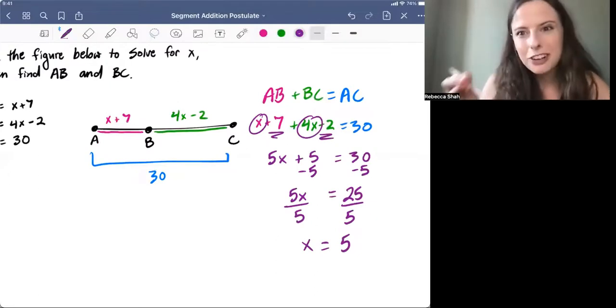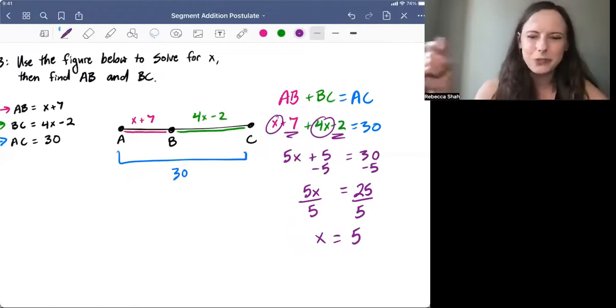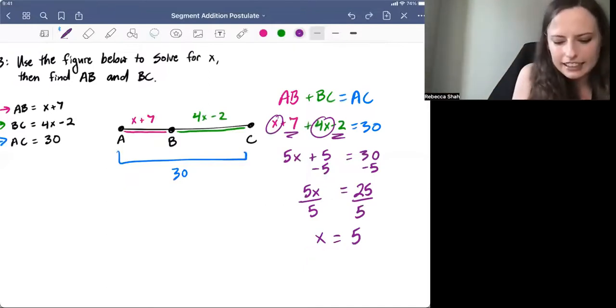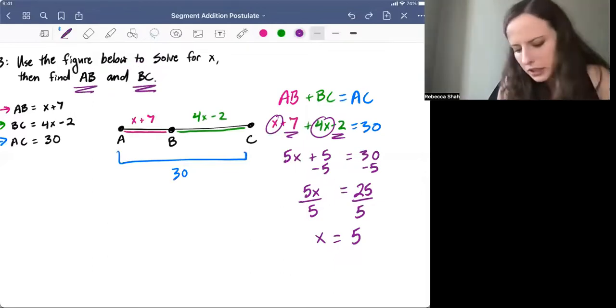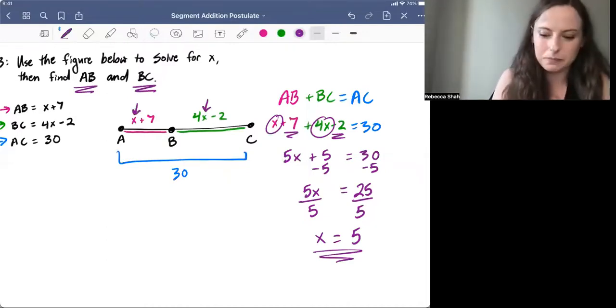Now we've solved for X, but we're still not done. This is a great example of an SAT question where you got the right answer, but you could still get the problem wrong if you're not reading what the question is really asking for. It's asking us for the measure of each of those segments, AB and BC. So now that we know that X is five, we're going to take that and plug it in here and here for X to find those actual measures of the segments.